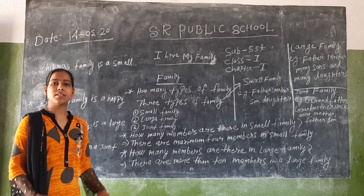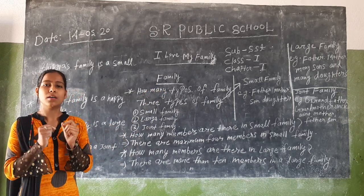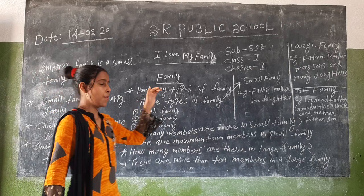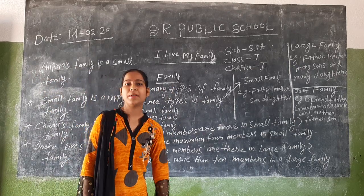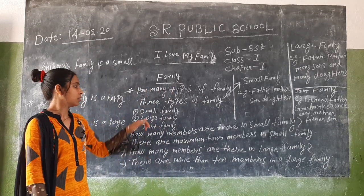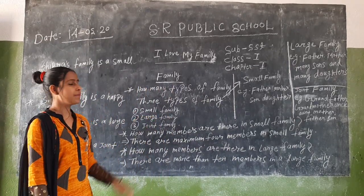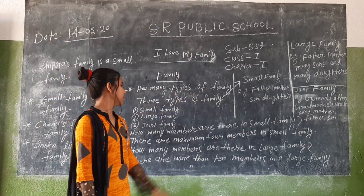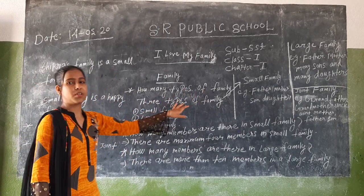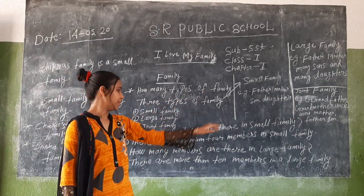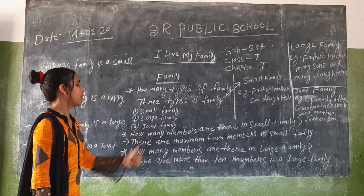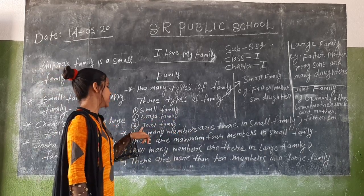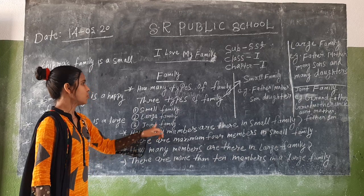Family — parents and children make a family. How many types of family? We studied in the previous class how many types of family. There are three types of family: number 1, small family; number 2, large family; and number 3, joint family.